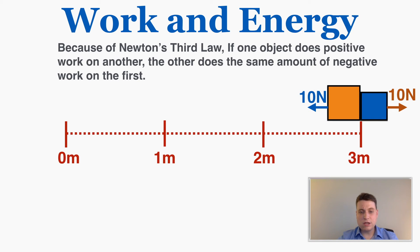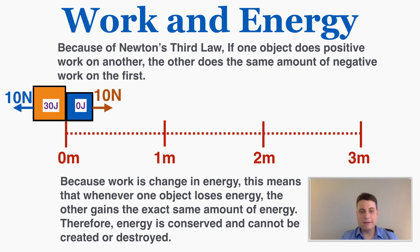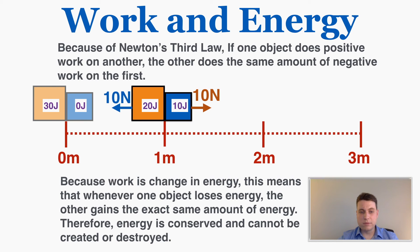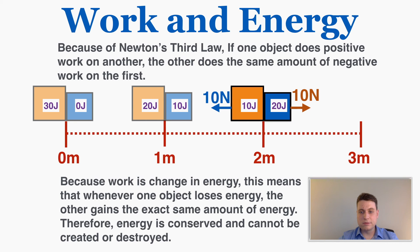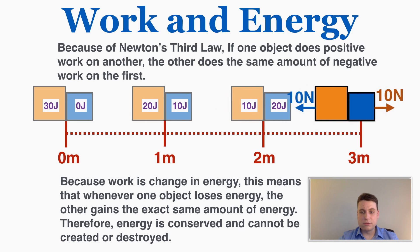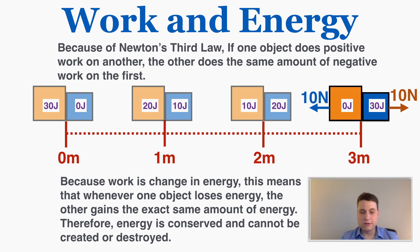Because work is change in energy, whenever one object loses energy, the other gains the exact same amount. After one meter, the orange box has lost 10 joules and the blue box gained 10 joules. After two meters, the orange box is down to 10 joules and the blue box is up to 20. Finally, the orange box is at 0 and the blue box has 30 joules.